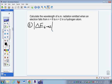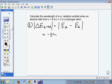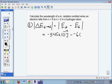Okay, what an absolute value just means we're going to make the answer positive. So that's equal to the absolute value of the final level, where it ended up, level 2, minus the starting level, which was level 6. So I'm looking back at my calculator for a minute, since I've erased it. Level 2 was negative 5.45 times 10 to the minus 19 joules, minus E6, which was negative 6.06 times 10 to the minus 20 joules.